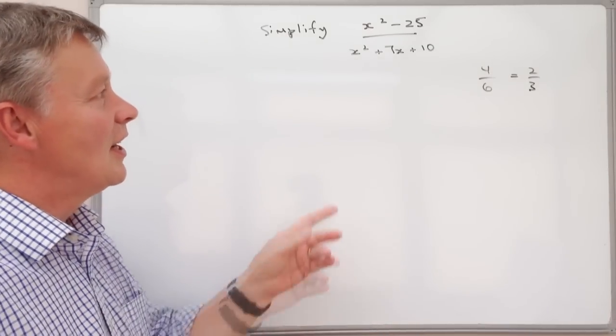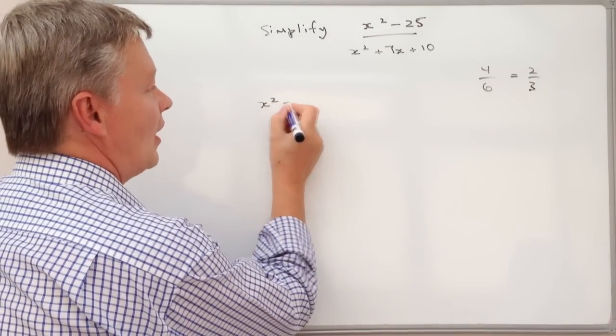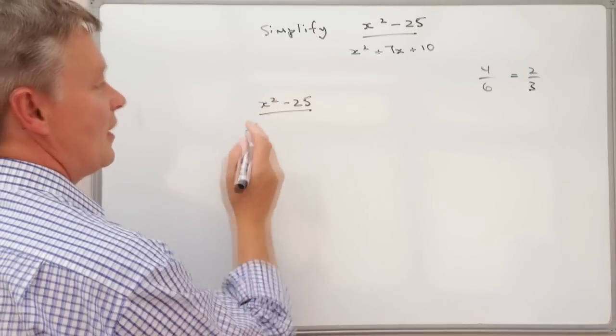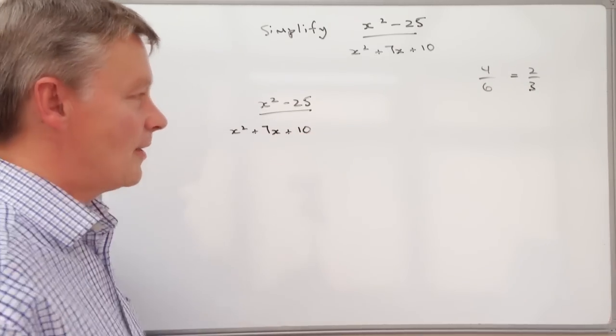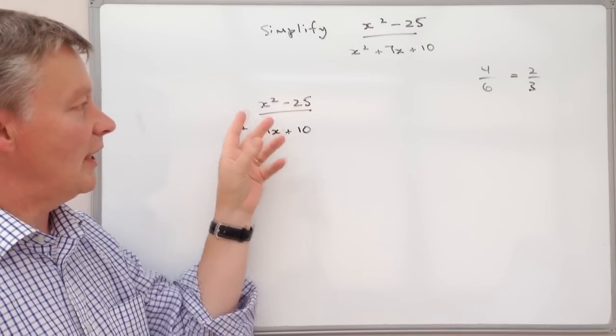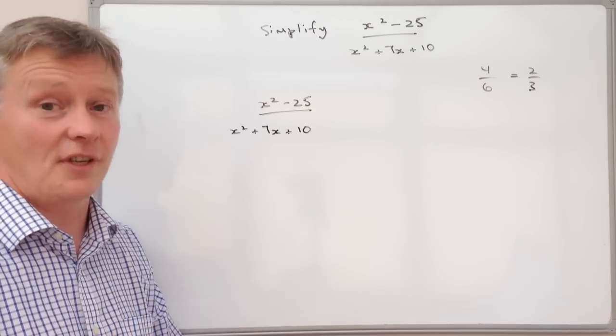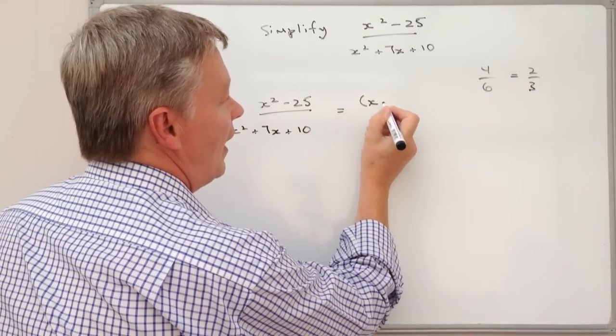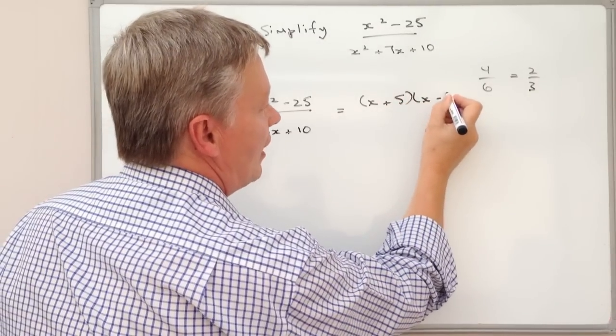But the first thing we're going to do is we look at the top bit which is the numerator and we've got x squared minus 25. If I just write out the whole thing again I've got x squared plus 7x plus 10 on the bottom. Well the main thing to remember or to look at is at the top this particular one is the difference of 2 squares. So if I factorize that it's going to be x plus 5 and x minus 5.